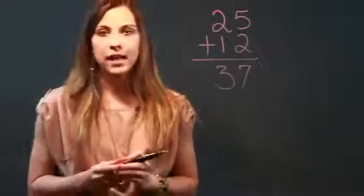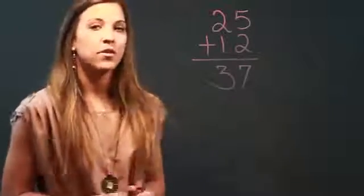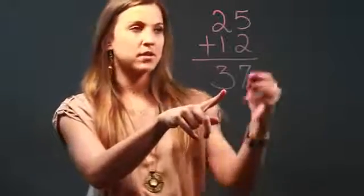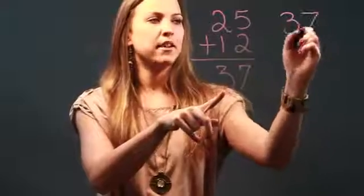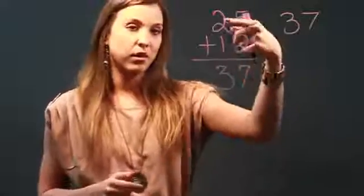And the way that you double check anything is by doing the inverse operation, the opposite of it. So that means that if I take my sum, the answer to my problem, 37, and I subtract one of the addends from it, I should get the other one.